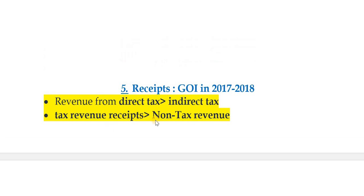Regarding the receipts of the Government of India in 2017-18: revenue from direct taxes is greater than indirect taxes — the government collected more direct taxes than indirect taxes. Also, tax revenue receipts are more than non-tax revenue receipts.